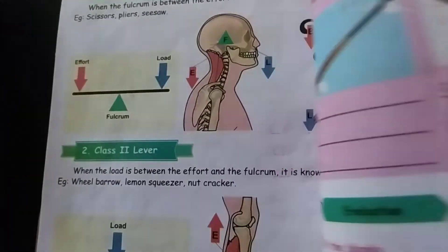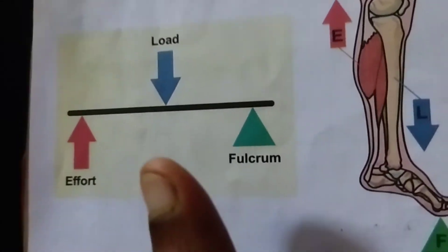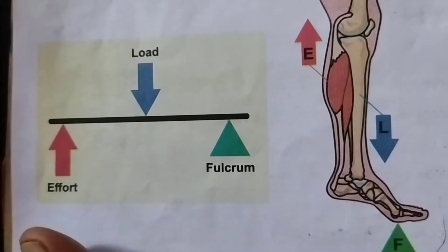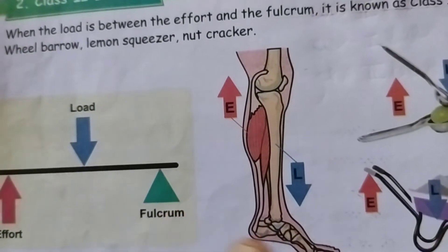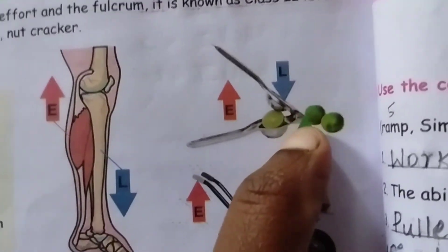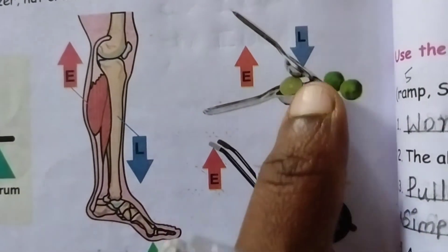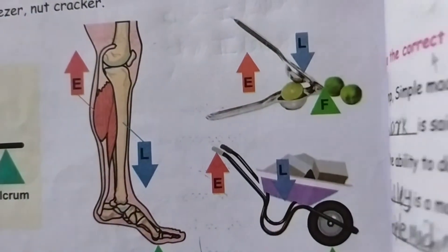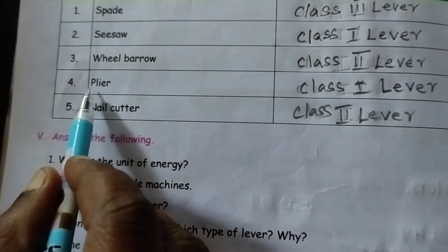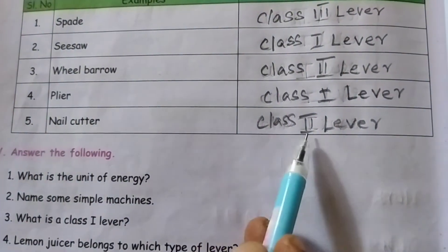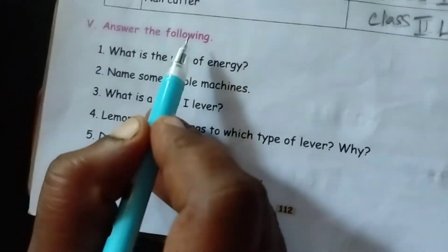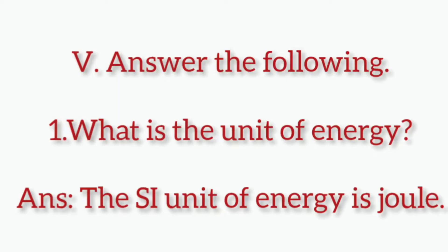Class 2 lever: the load is between the effort and the fulcrum. Class 1 lever: the nail cutter is a Class 2 lever.